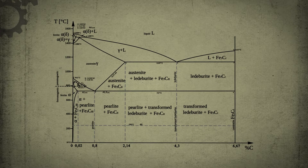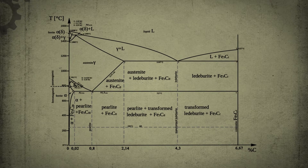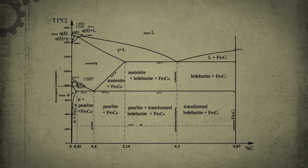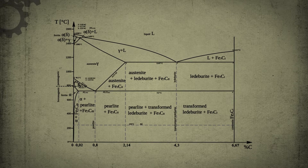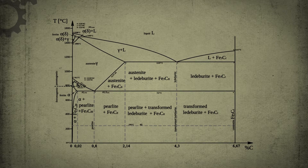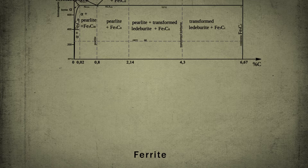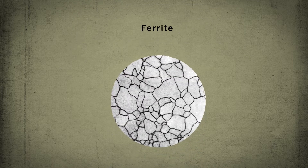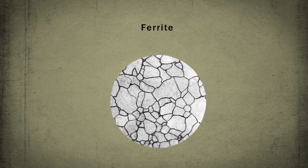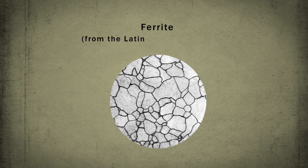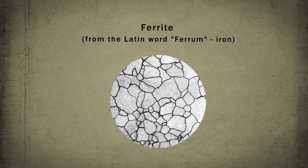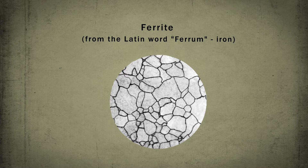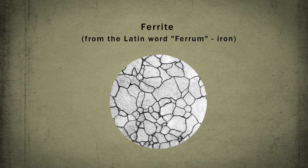Alloys of the iron-carbon system — steels and cast irons — have three main phases, i.e. structural components. Ferrite, which got its name from the Latin word 'ferrum,' meaning iron. The mechanical properties of ferrite are close to those of technically pure iron.